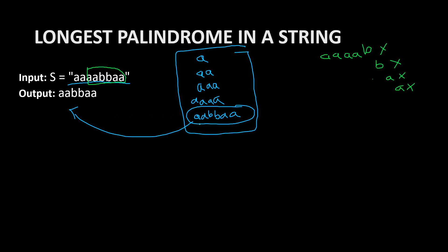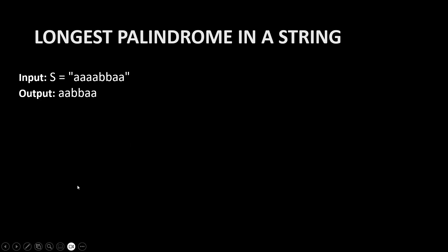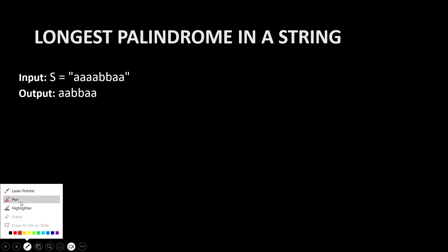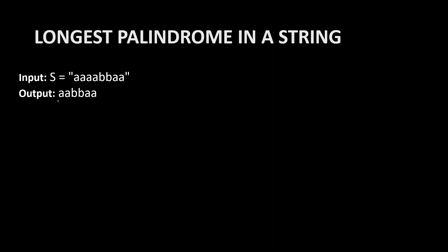Now we understand what a palindrome is — from left to right and right to left it should be the same. Now how do we approach this in code? We are going to start with an even example. For odd and even, the cases will be slightly different. In the even case, we take two pointers and two mid values and compare them. This will be the i pointer, and this will be the j pointer. From the middle element, we check — the opposite side will always be the same in a palindrome.